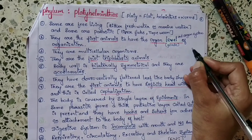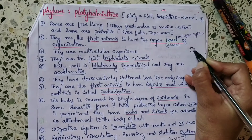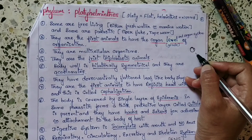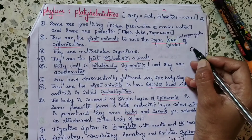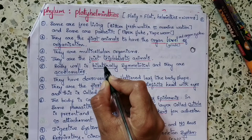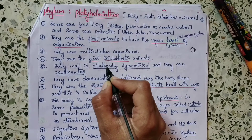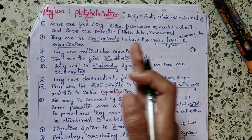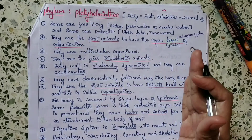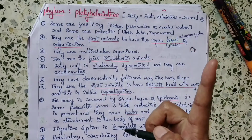Coming to the body wall, it is bilaterally symmetrical and they are acoelomates. Bilateral symmetry means the body can be divided into identical left and right halves in only one plane.